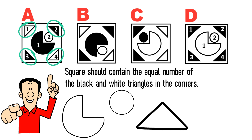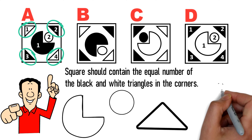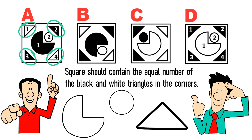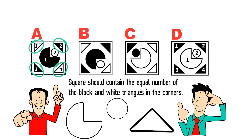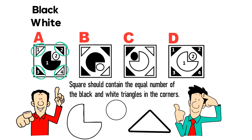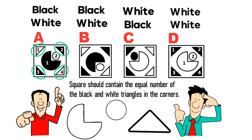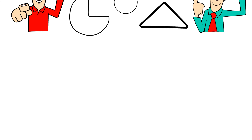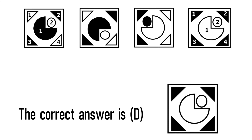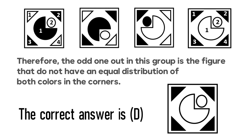But in choice D, there are four black triangles in all corners. The circles in this picture do not have a pattern — their primary goal is to confuse you. There is no consistent large-small circle color pattern across shapes A, B, C, and D. So we ignore the circles and focus on the triangles. The odd shape that doesn't belong is choice D, which does not have an equal distribution of triangle colors.